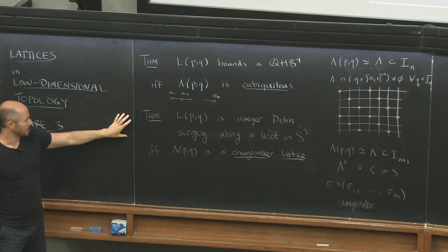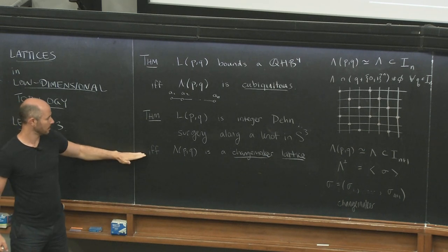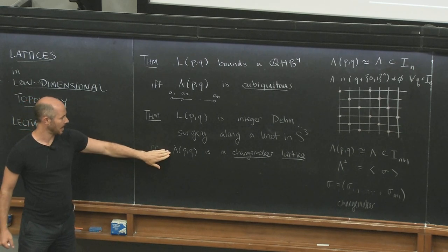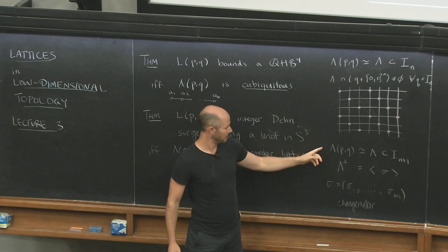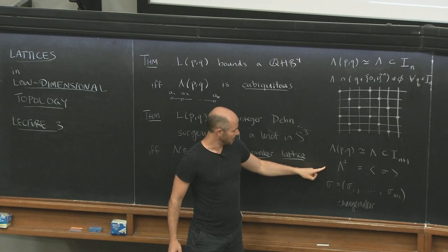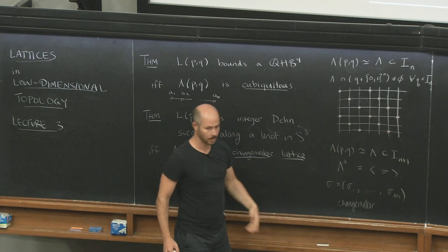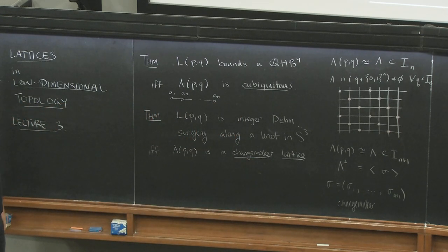A related theorem is that for a lens space, being the result of integer Dehn surgery along a knot in S³ is equivalent to that lattice embedding into a diagonal lattice with codimension one, such that the orthogonal complement is a so-called changemaker vector — a curious combinatorial condition.